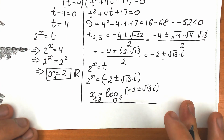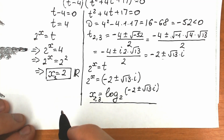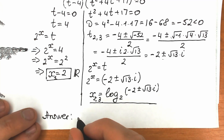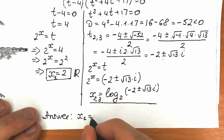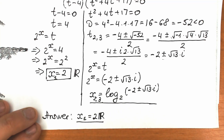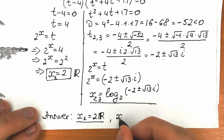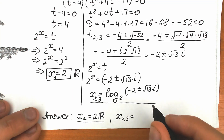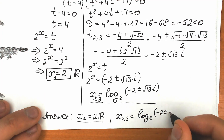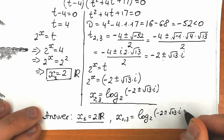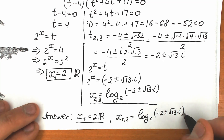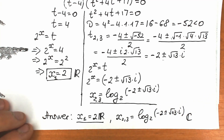Let's write our general answer. x₁ equals 2 — this is our real number root. x₂ and x₃ equal log base 2 of (minus 2 ± i√13) — these are our complex roots. These are all the roots to this challenge.